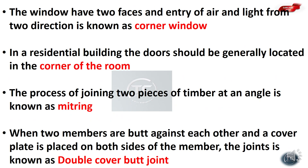A window that has two faces and allows entry of air and light from two directions is known as a corner window. In residential buildings, doors should generally be located in the corner of the room. The process of joining two pieces of timber at an angle is known as mitering.